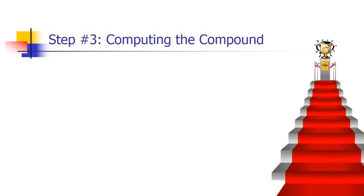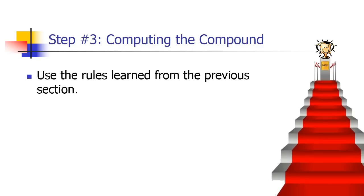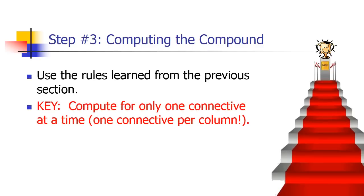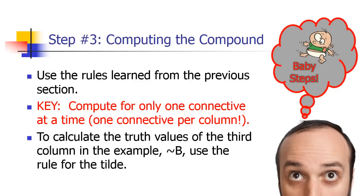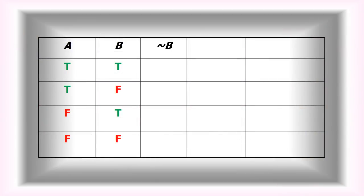Now we're ready for the tough stuff: computing for the compound. Use the rules from the previous section, and remember, compute for only one connective at a time — one connective per column — and work your way up to the whole proposition. If you take things in baby steps, you won't make mistakes. To work my way up to the whole compound, I need to first handle the tilde, then the wedge, and then finally the horseshoe. Go one connective at a time per column and you won't make mistakes.